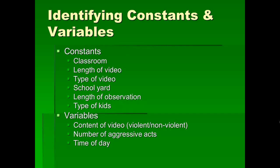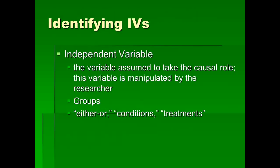However, there are certain things that vary in this experiment. One is the content of the video — violent versus nonviolent. Another thing that varies is the number of aggressive acts each student commits; a student could commit none, or 30, or even 60. Also, the time of day varies — some students are tested in the morning, some in the afternoon.